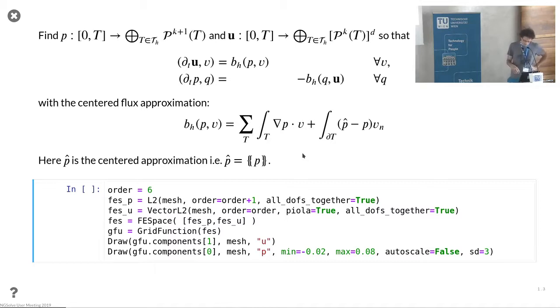We use order six polynomials for the pressure, order k plus one, so order seven. We have the flag all dofs together, which means there's no low order high order separation in the numbering of the degrees of freedom.